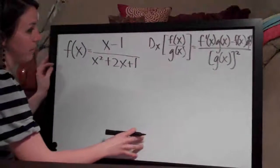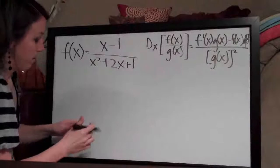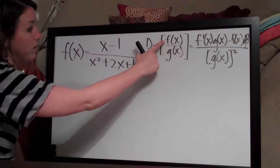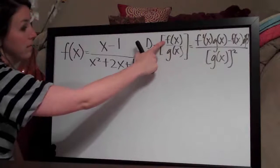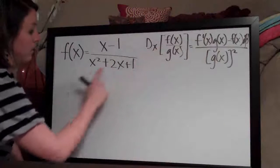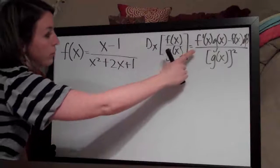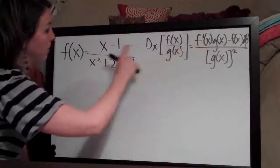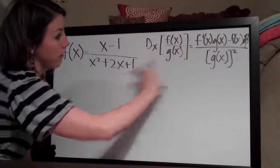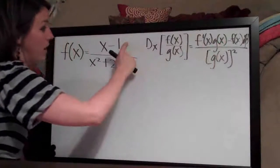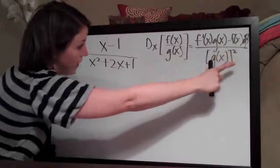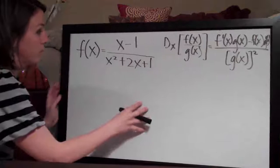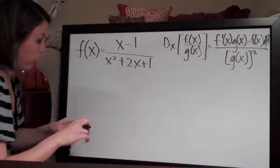All this is saying is that when you're trying to take the derivative of a function and you've got something on the top, something on the bottom. In this case, f(x) is x-1 and g(x) is x²+2x+1. You follow this formula to take the derivative. So we'll do the derivative of the top times the bottom minus the top times the derivative of the bottom, divided by the bottom squared. We're just going to apply the quotient rule here.